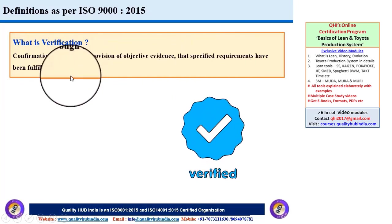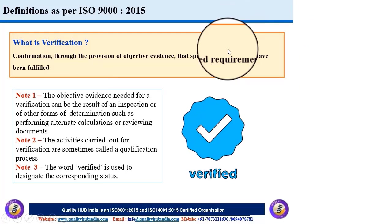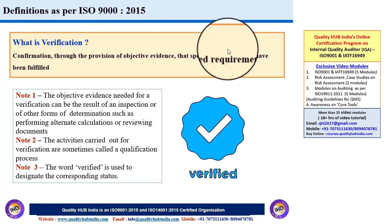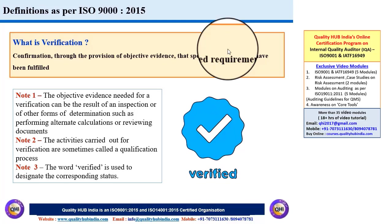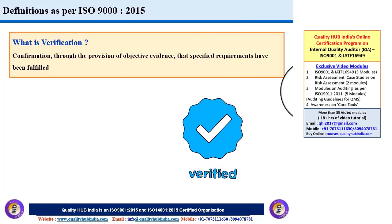For example, the customer is asking for certain dimensions and specifications which might have some tolerance. If you fulfill all those requirements, the means you have used to fulfill them would be called verification. To fulfill the requirement, you might conduct some inspection or do some qualification process — this would be part of the verification program. Products are often stamped as 'verified', meaning verification has been completed as per some guidelines, standards, or documents.